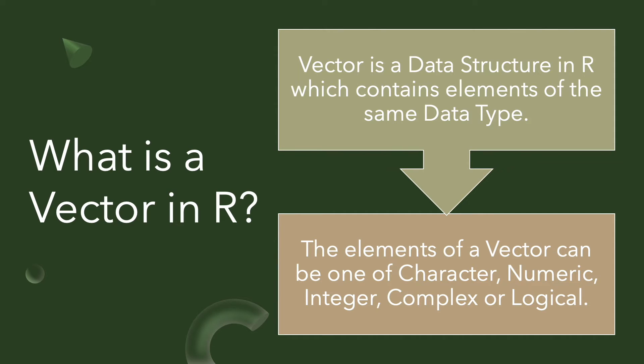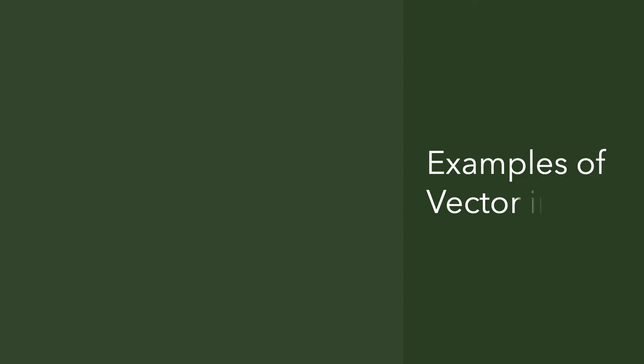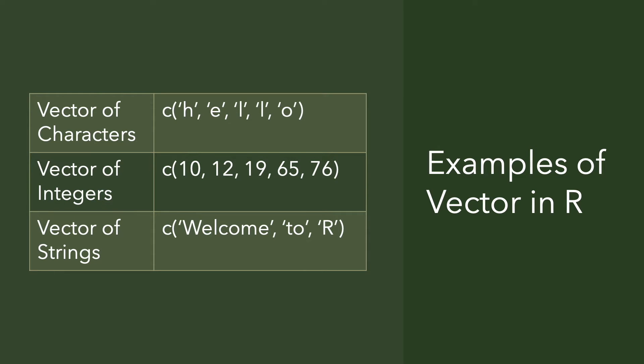Let's see some examples of vectors in R. We can have a vector of characters — you write c() and within the brackets give individual characters, for example h, e, l, l, o. Similarly we can have a vector of integers by giving different numbers inside c(). We can also have a vector of strings such as c('welcome', 'to', 'r'). Each item inside the vector is called an element. Notice that we use the function c() to declare a vector.